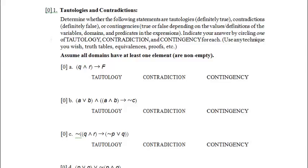If we can prove a statement, then the statement is a tautology. If we can prove the negation of the statement, then the statement is a contradiction.